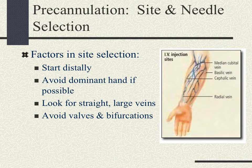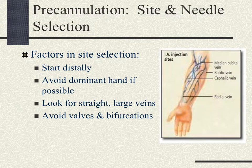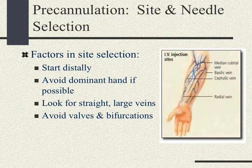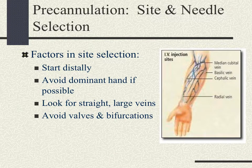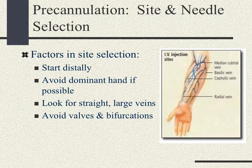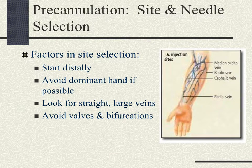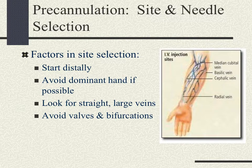When selecting your site, start distally — if you are unable to successfully start an IV, you will move up from that site, so be as distal as possible. Avoid the dominant hand if possible. Look for straight, large veins and avoid valves and bifurcations. Make sure the catheter does not lie within a valve, as the flow could be occluded whenever the valve closes, and going through a valve can cause the vein to blow due to obstruction of flow.